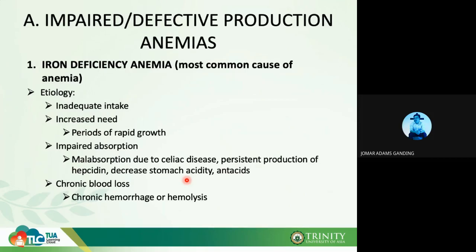Antacids are medication for hyperacidity, and if you have too much antacid, the pH of your stomach becomes alkaline, so your ferric iron will not be converted to ferrous iron and will not be absorbed. Next is chronic blood loss — chronic hemorrhage or hemolysis can also cause iron deficiency anemia. It can be through repeated blood donations, chronic hemorrhage, or hemolysis. Over time, accumulated losses will cause increased heme iron loss in your body.